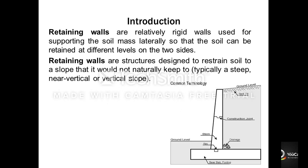A retaining wall is something which retains soil from collapse. Retaining walls are used to retain earth or any other material so that ground surfaces at different elevations are maintained on either side. A retaining wall has two portions: a vertical part called the stem, and a horizontal portion called the base slab. The front portion is called the toe slab and the rear portion is called the heel slab.